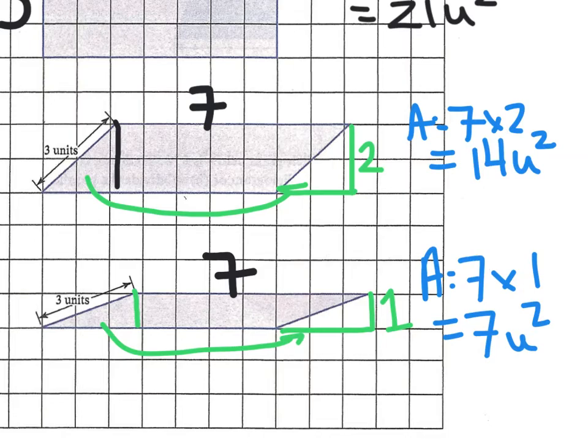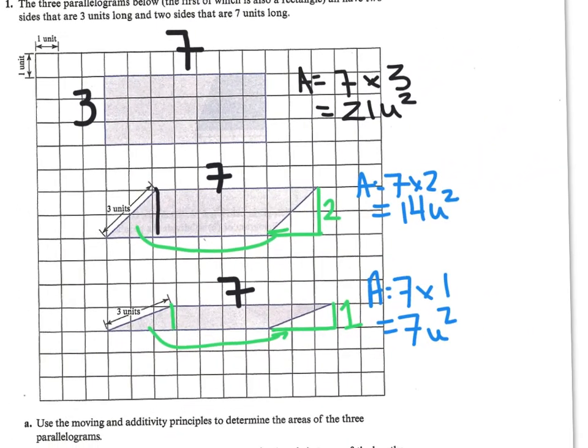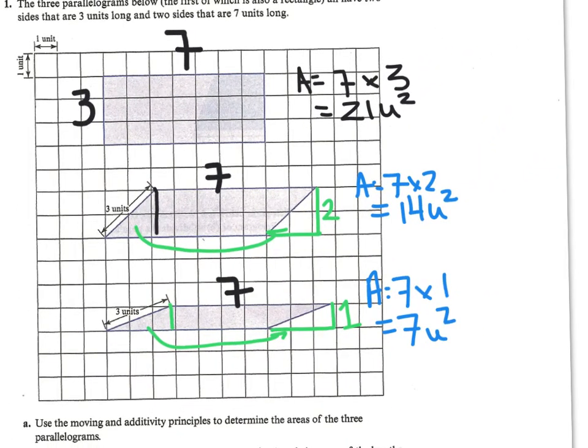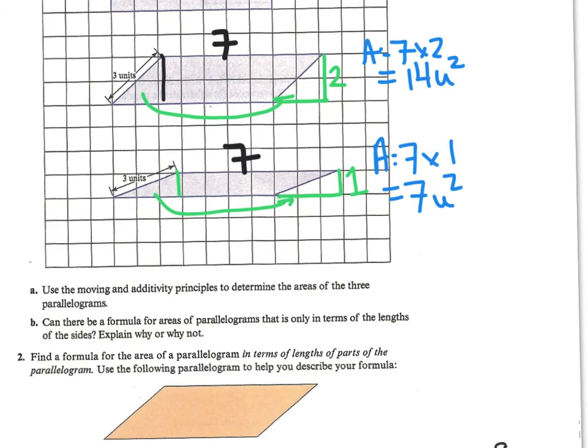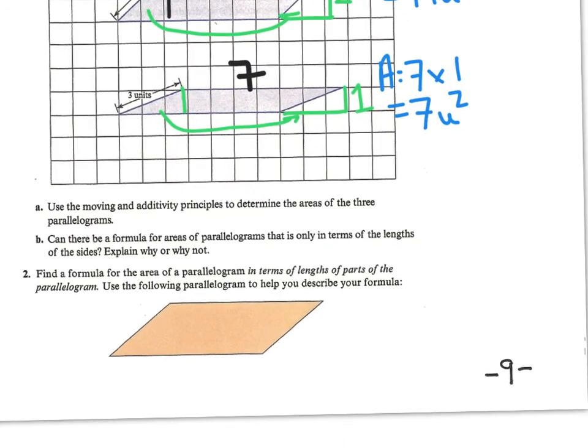So as this parallelogram got shorter and longer his area got smaller. The answer to question a is well, a is us moving it. B is that no, area is not going to be the base times the leg. As we can see we've got that same base and leg size on all three of them and we found three samples where the area is different.